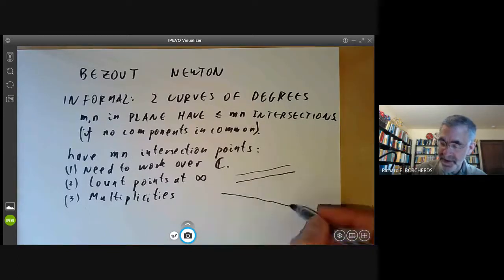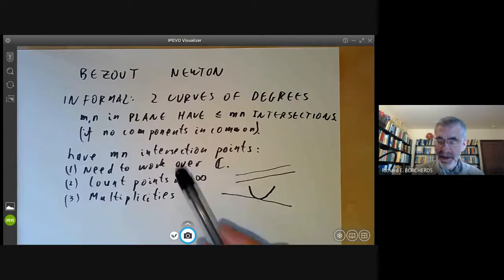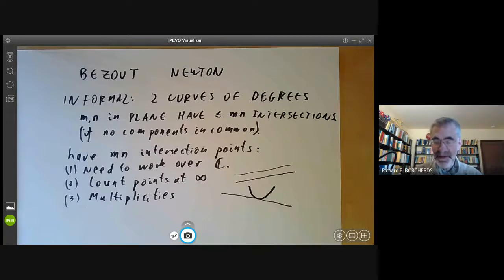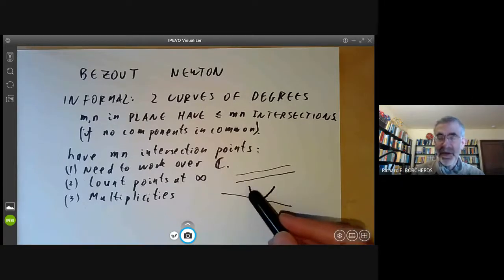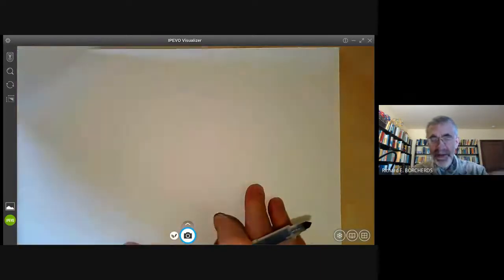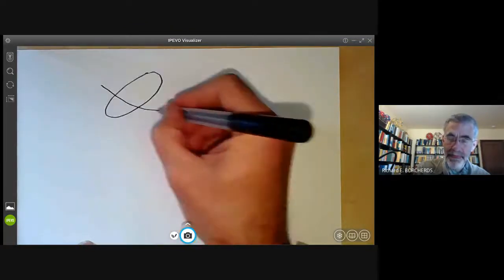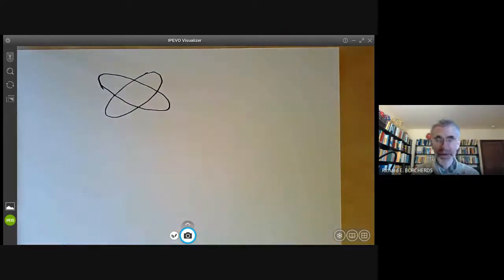And third, we have to worry about intersection multiplicities. So if we've got a curve, a straight line meeting a parabola, then you need to count that as meeting at two points rather than one point to get it right. And it's actually quite tricky to get even a correct statement of Bezout's theorem. The problem is defining intersection multiplicities isn't all that easy. You can see Bezout's theorem is plausible. For example, if we take two ellipses like this, it's kind of plausible they have four intersection points and so on.